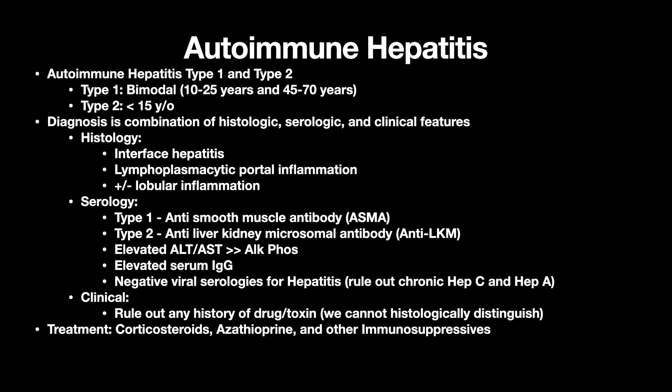Histologically, you'll see interface hepatitis, lymphoplasmacytic portal inflammation, and plus or minus lobular inflammation in zone 2. For serology, in type 1 AIH you'll see anti-smooth muscle antibody, and in type 2 you'll have anti-liver kidney microsomal antibody, or anti-LKM.